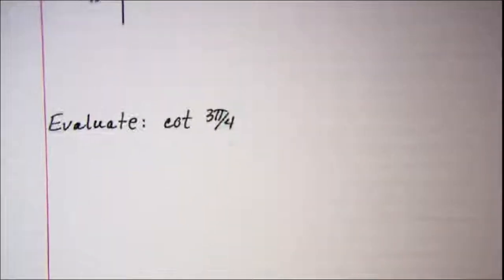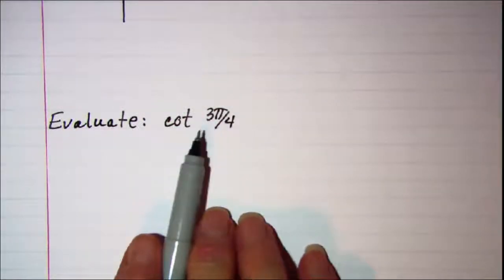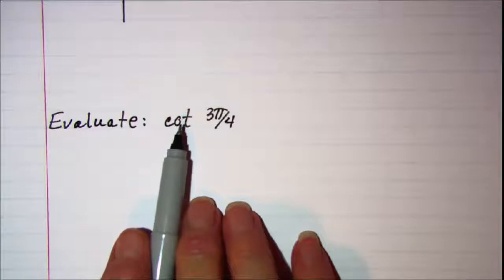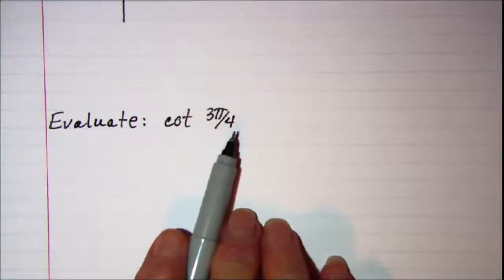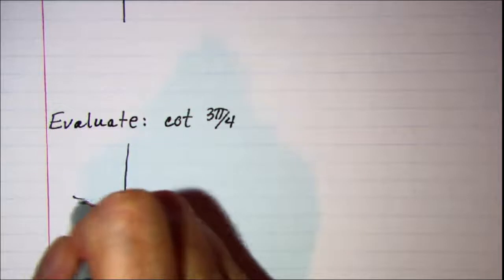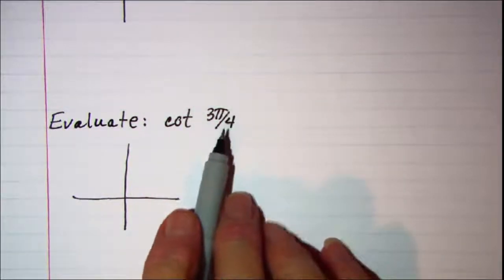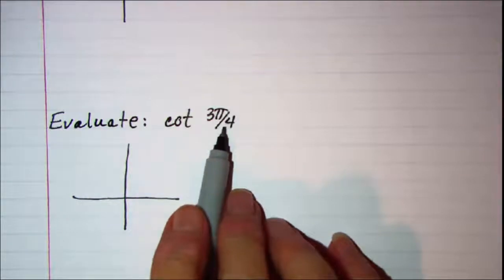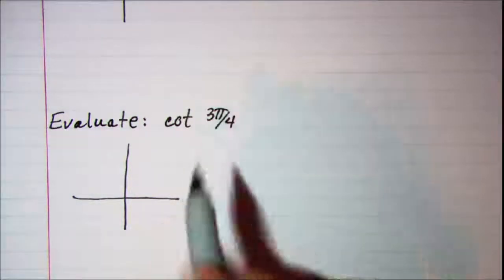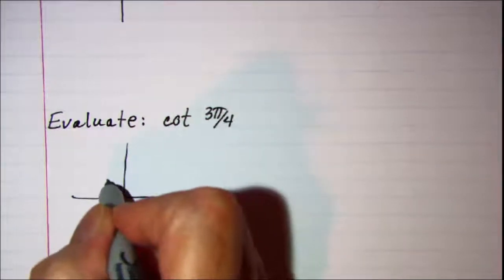Another one. On this one we have a cotangent of 3 pi over 4. Whenever I have a denominator of 4 I know that I'm dealing with a 45-45 right triangle. Now 3 pi over 4 is going to be in quadrant 2.